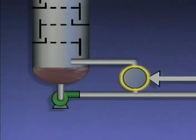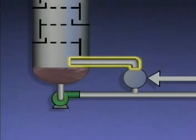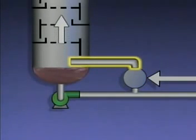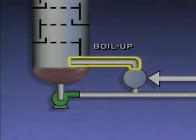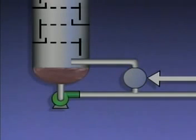Vapors from the reboiler — or in some cases, a mixture of vapors and liquid — re-enter the tower. The vapors then rise up in the tower. These vapors, and the heat they contain, are often referred to as boil-up. The hot boil-up provides heat that's needed for the distillation process to take place in the tower.